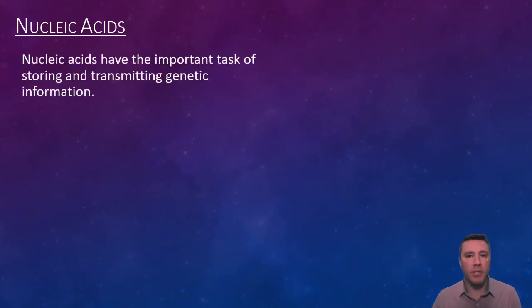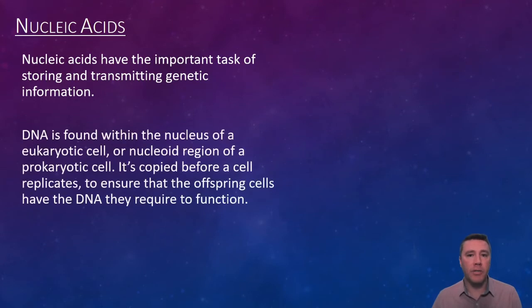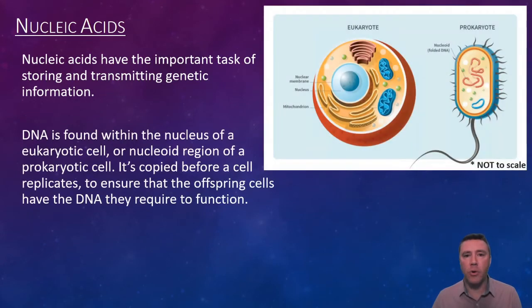Nucleic acids are responsible for storing and transmitting genetic information. In eukaryotic cells, DNA is found stored within the nucleus, and in prokaryotic cells is free-floating in the cytosol in a region called the nucleoid. In both cases, the cell's genetic material is copied so that the resulting offspring cells have a complete, accurate set of genetic information.